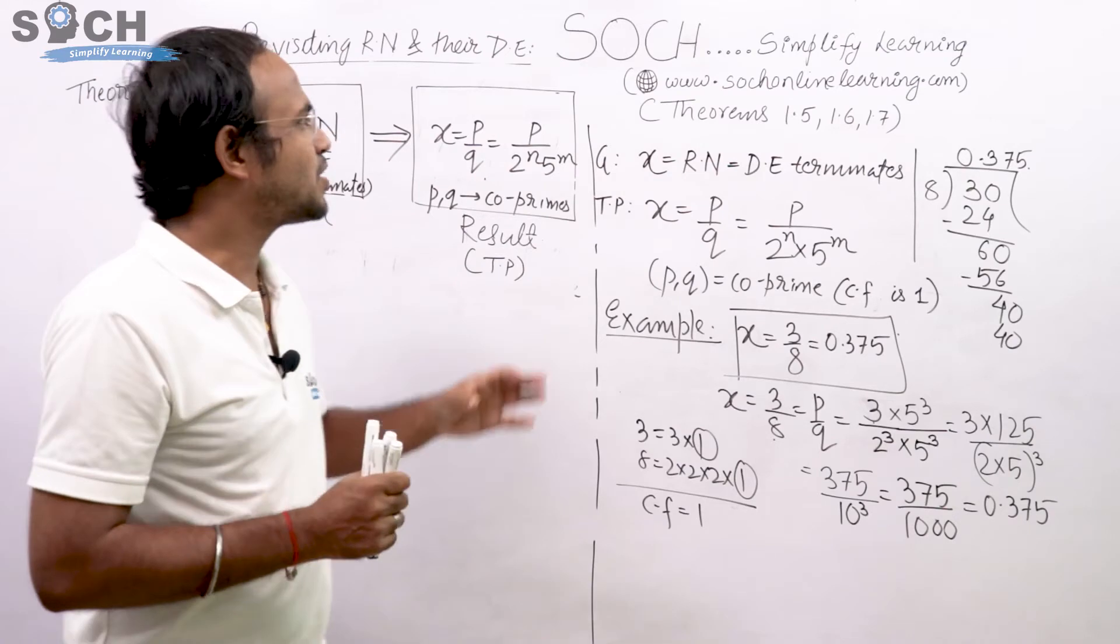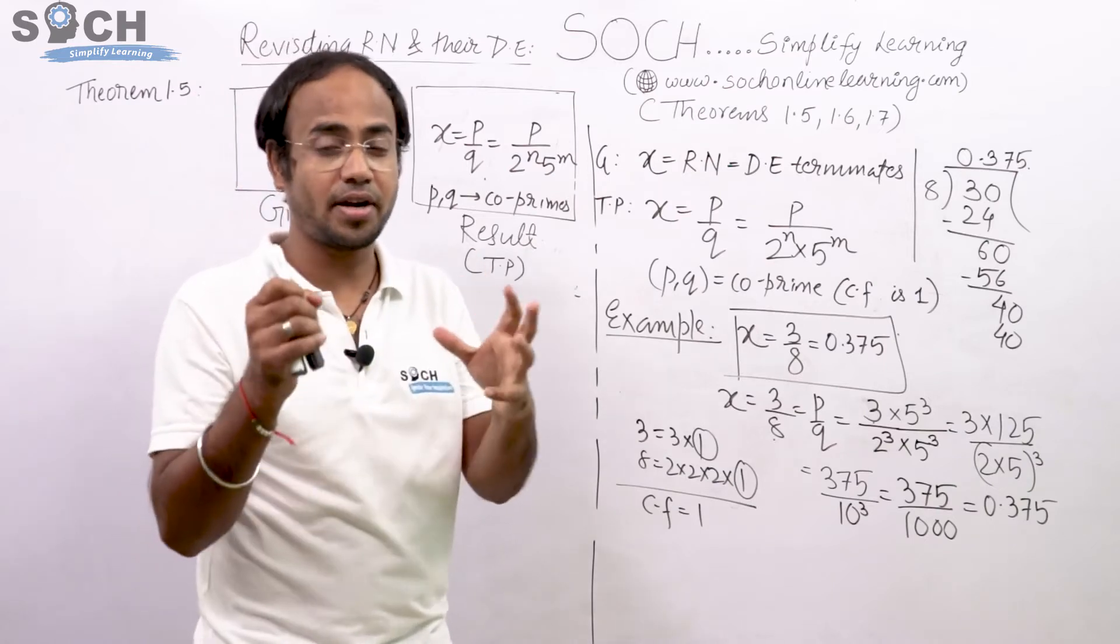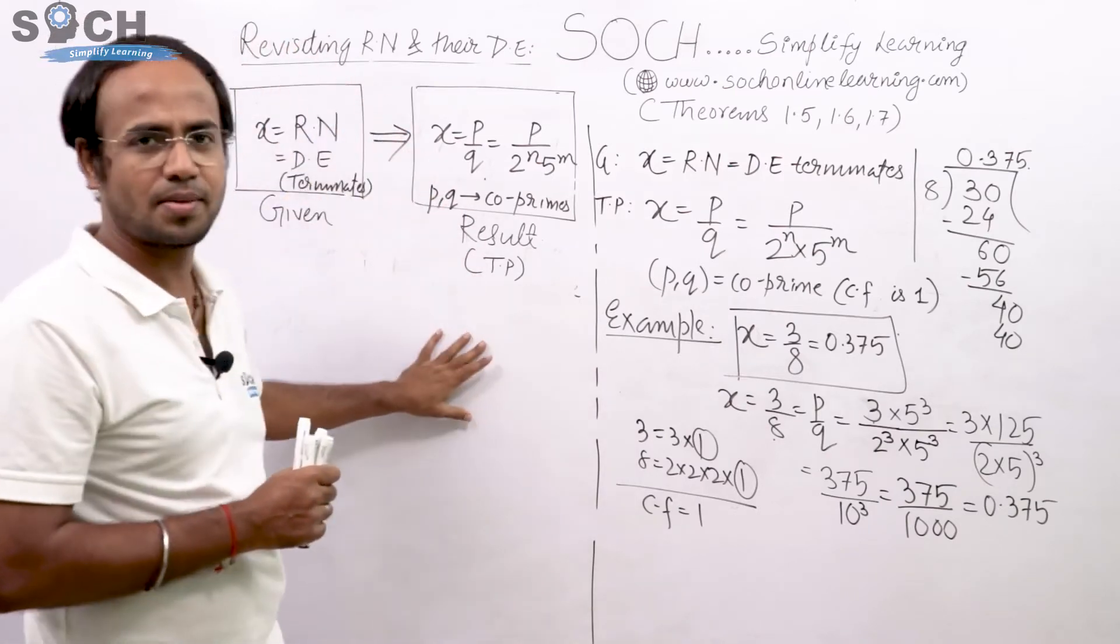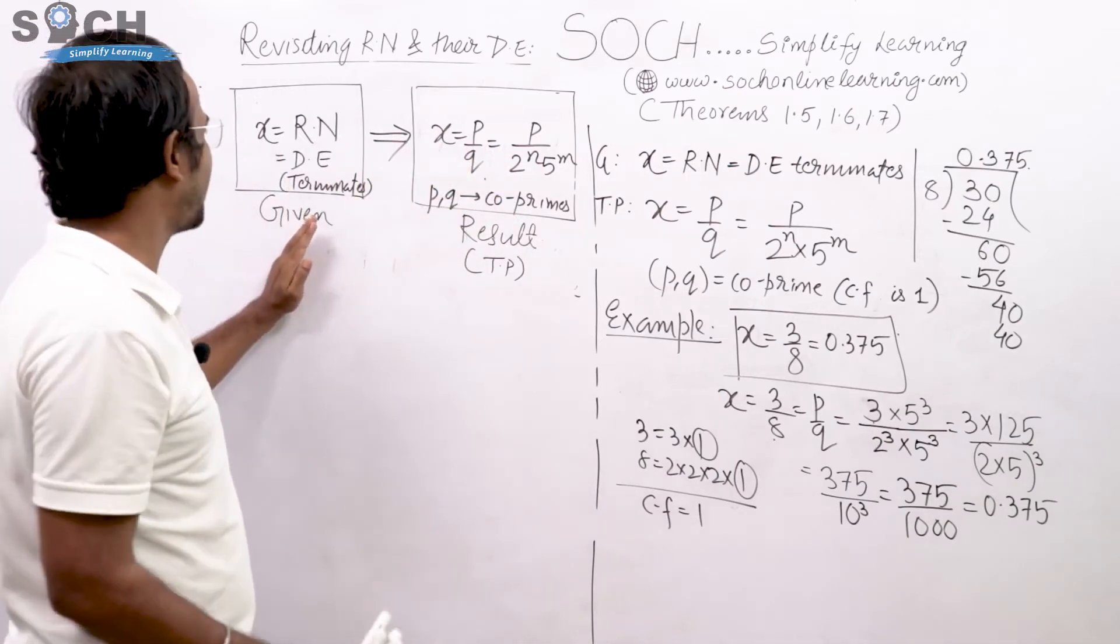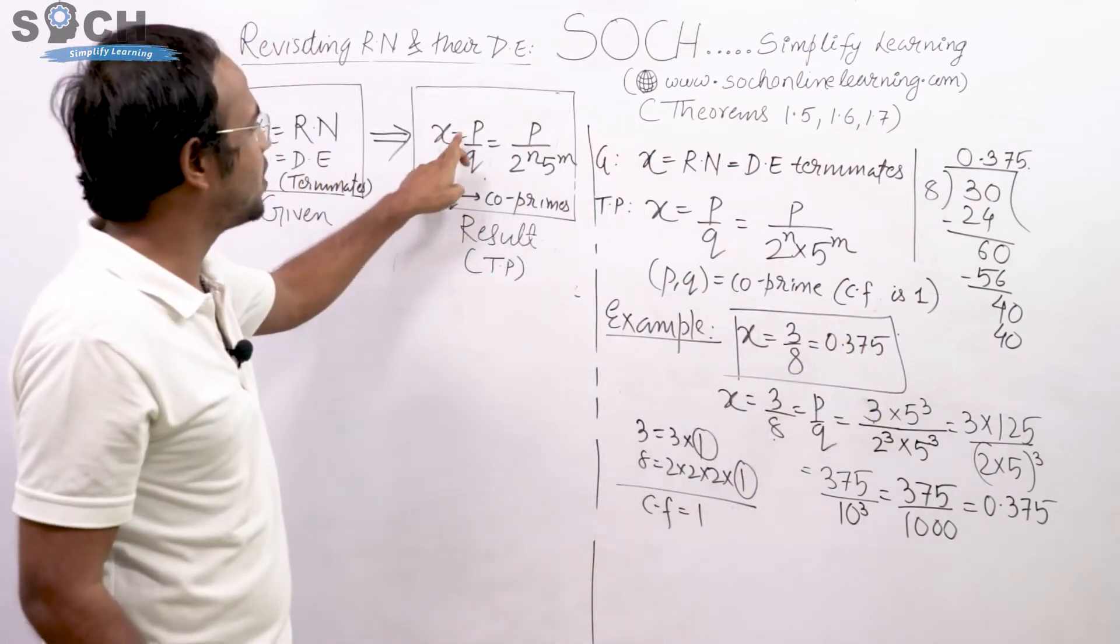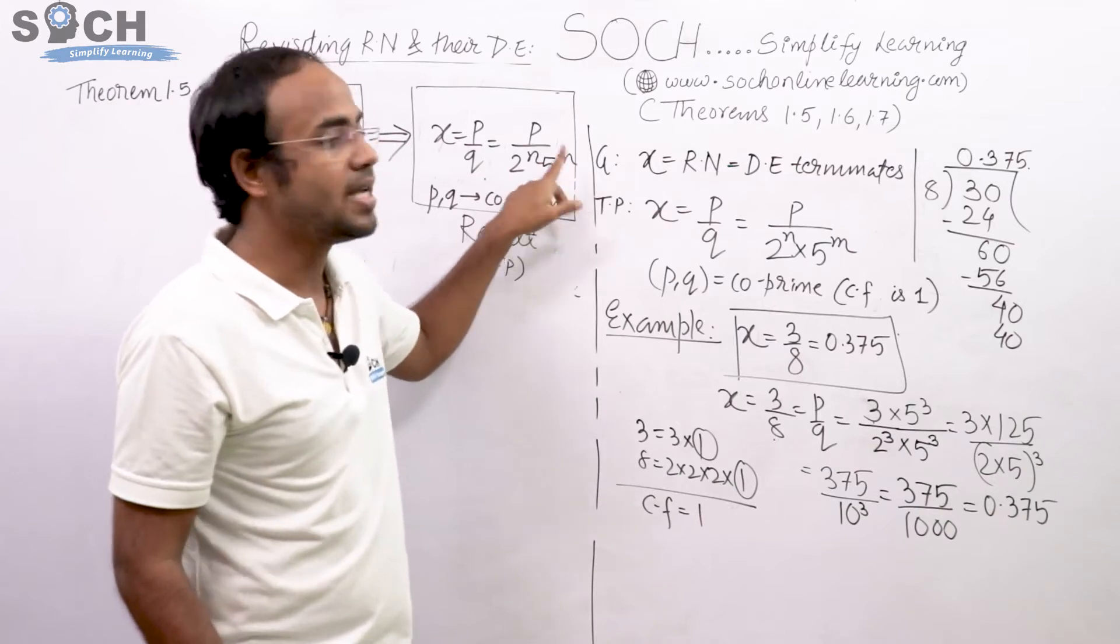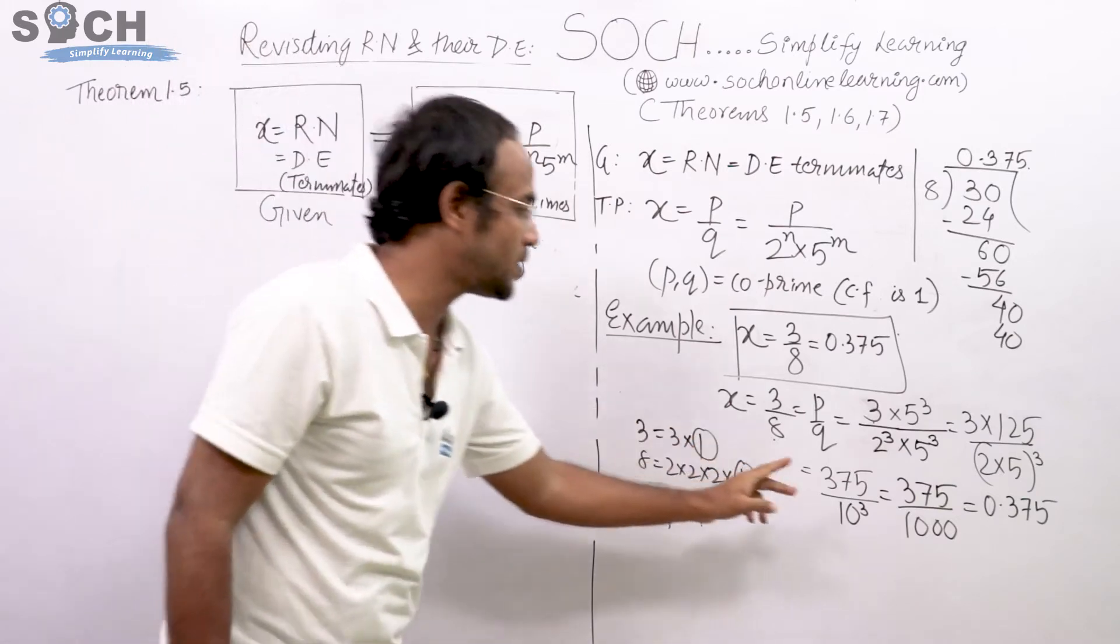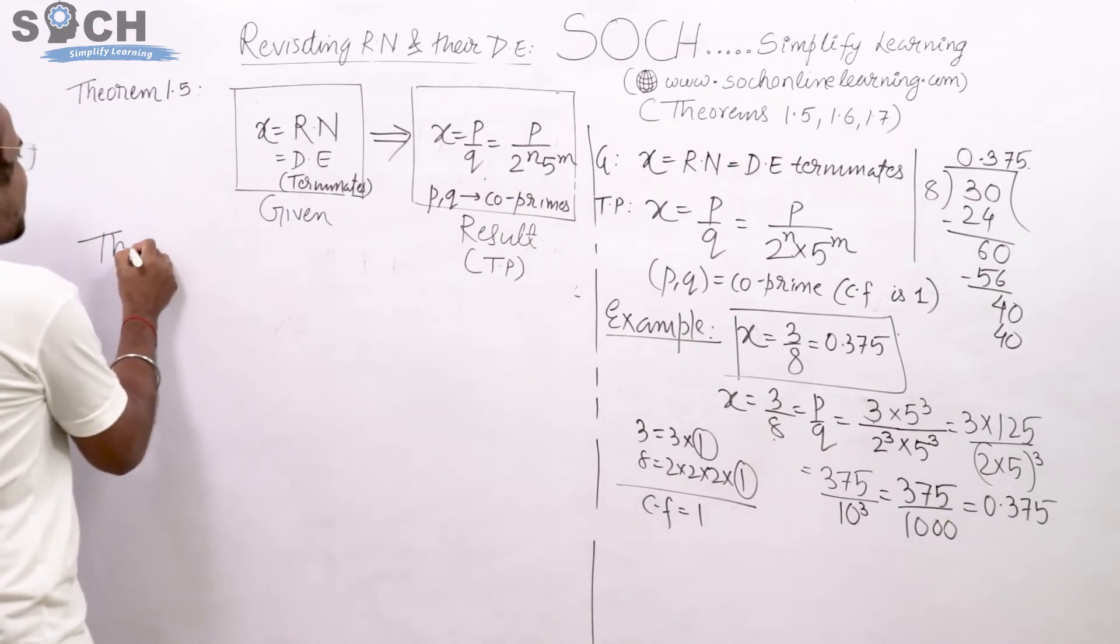My dear students, that's why I said Soch is all about simplified learning. The same class you can find in digital recorded form in our www.sochonlinelearning.com. Now what I did, the whole cumbersome statement which was difficult for me, I converted into this which I understand. If X is a rational number having terminating decimal, then it is of the form P by Q where Q is 2 raised to N and 5 raised to M, where N and M are non-negative integers.